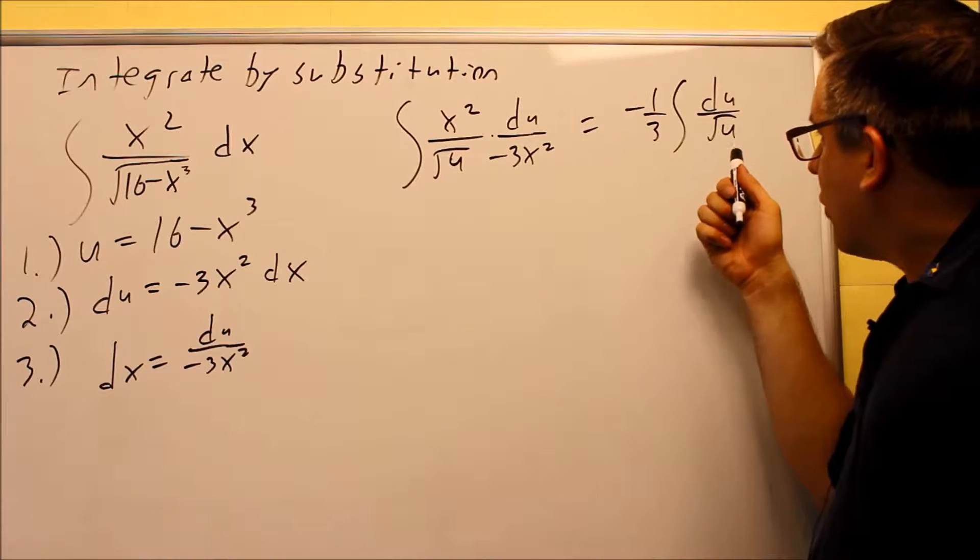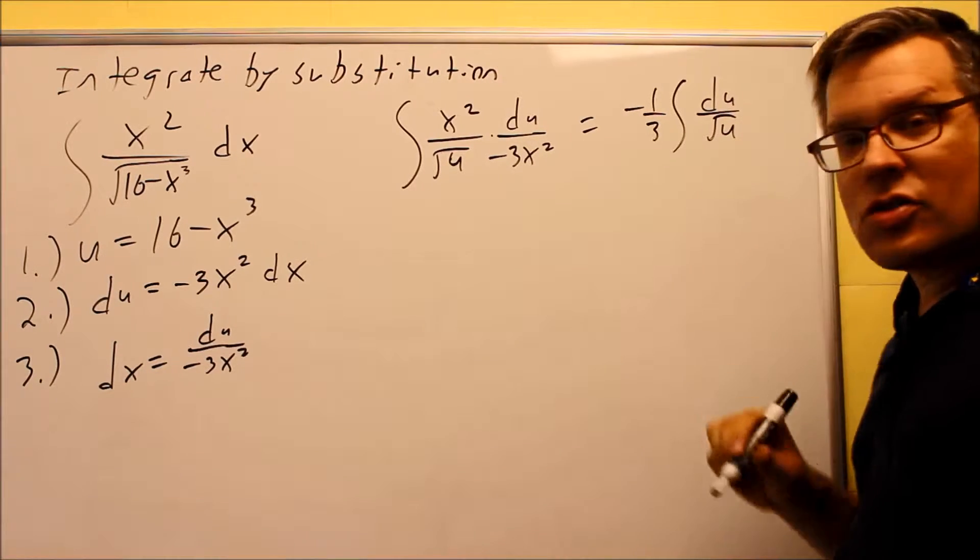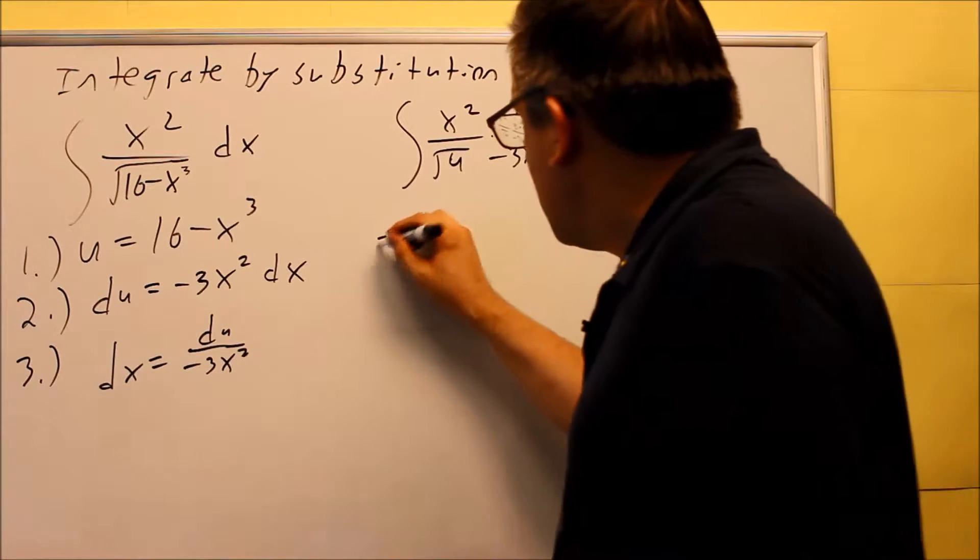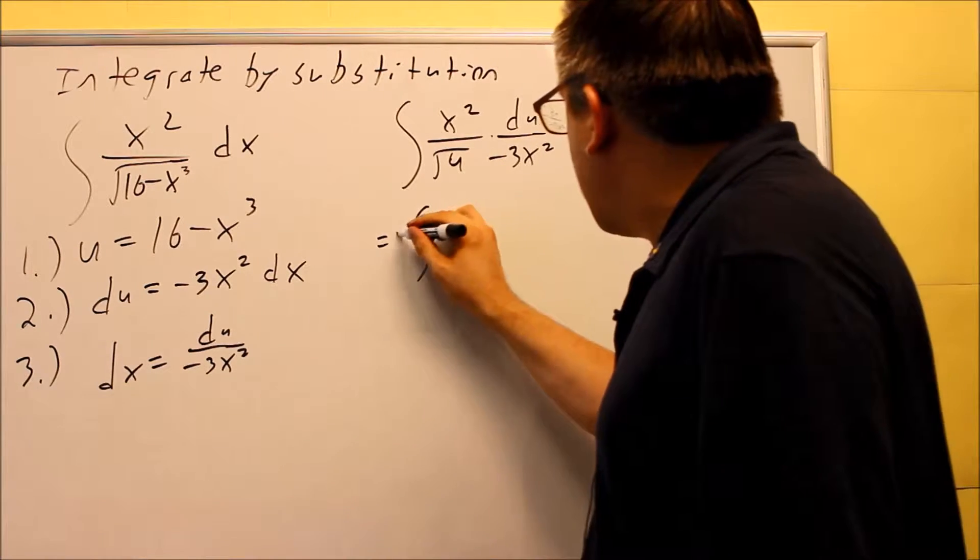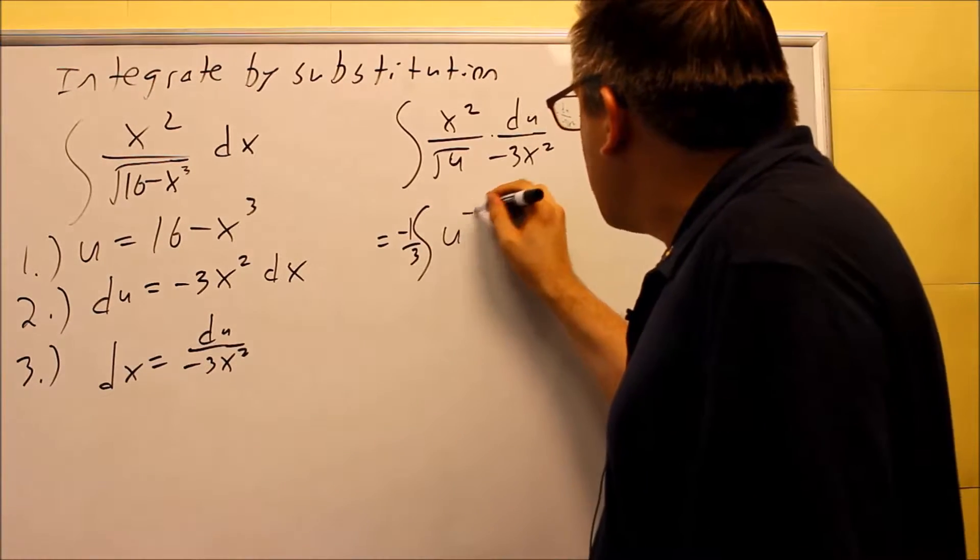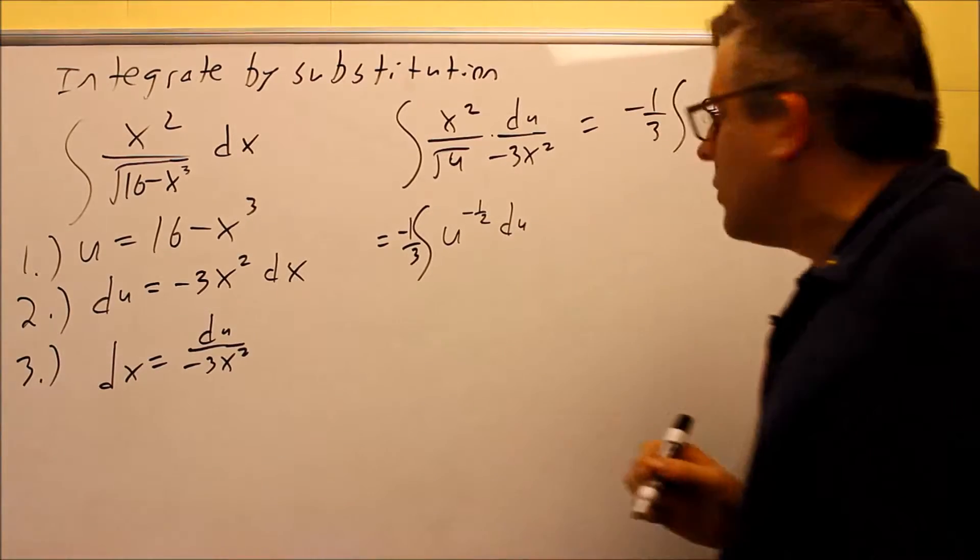So now that I have that complete, what I need to do is I'm going to change this into a power, so it's going to be easier to do the inverse power rule. So I can rewrite that as negative one-third on the outside, and then this is going to be u to negative one-half du.